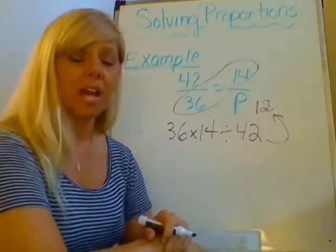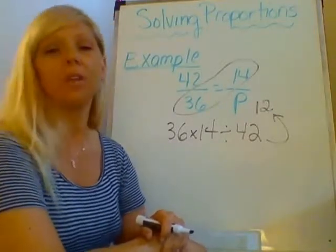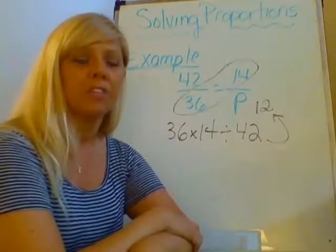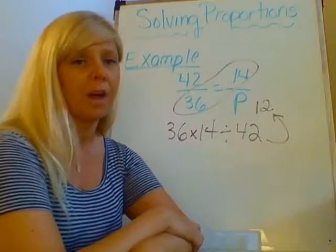So there are two ways on how to solve proportions. We can either figure out what the multiplying or the dividing number is, or we can use cross multiplication division to figure out what the unknown value is.